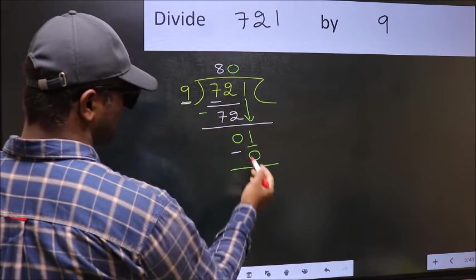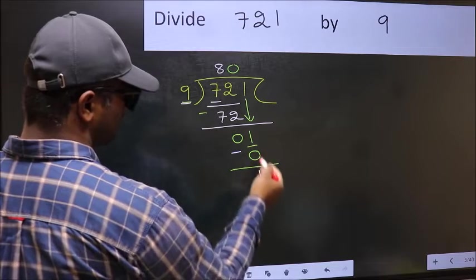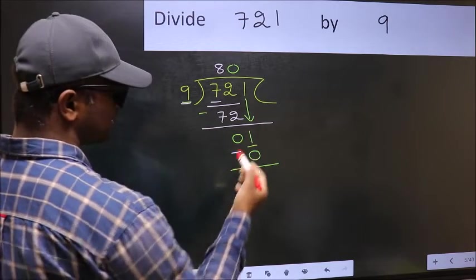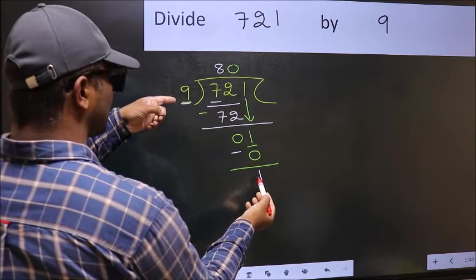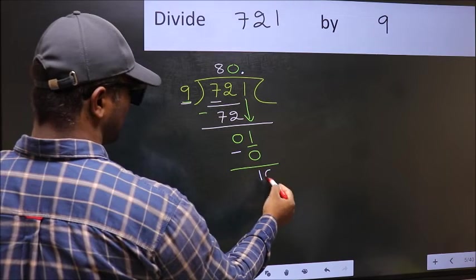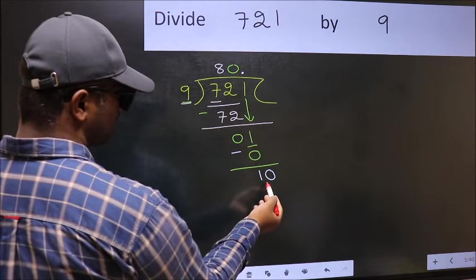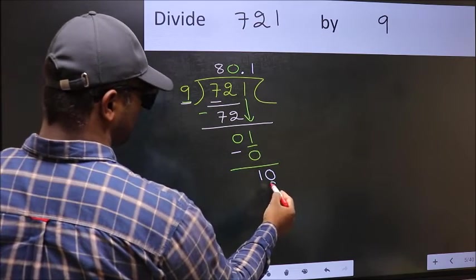Now we should subtract. 1 minus 0, 1. Over here, we did not bring any number down. And 1 is smaller than 9, so now you should take 0. So 10. A number close to 10 in 9 table is 9 once 9.